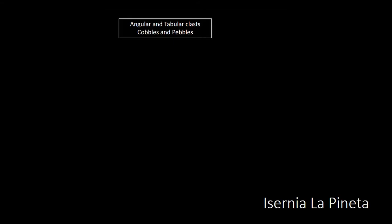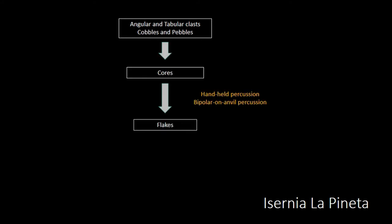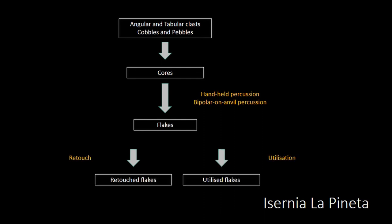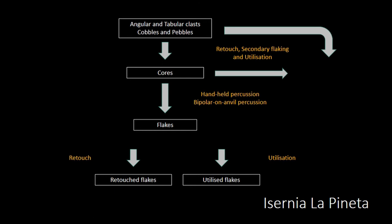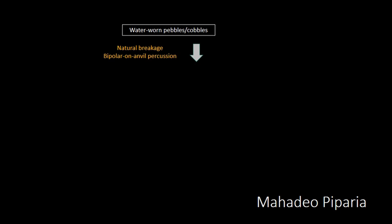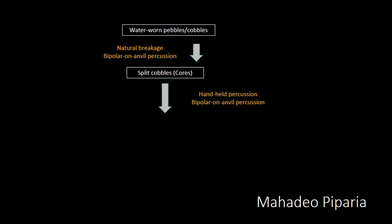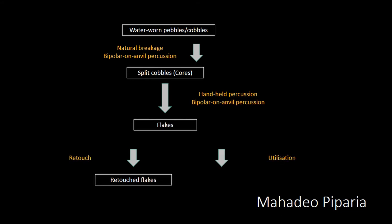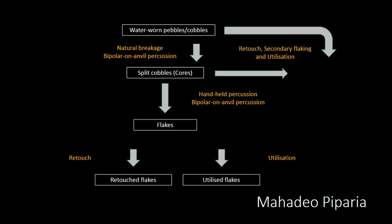The reconstructed reduction sequence at Isernia involves angular clasts subjected to two forms of percussion to get flakes, some of which are retouched or utilized; both coarse and angular clasts were sometimes subjected to secondary flaking or utilization as core tools, with one example of a biface. Waste from the entire sequence was sometimes utilized. This mirrors Madhya Pipriya, wherein water-worn pebbles are selected for natural breakage or subjected to bipolar anvil to split the cobble as a core, then subjected to two forms of percussion to get flakes — retouched or utilized — with both cobbles and cores subjected to further work as core tools or bifacially shaped as bifaces.